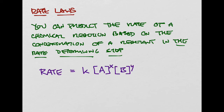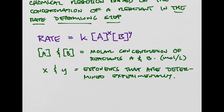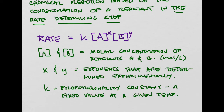The rate law is: rate = k[A]^x [B]^y, where [A] and [B] are the molar concentrations of reactants A and B in moles per liter (molarity). X and Y are exponents determined experimentally — exactly what we'll be doing in lab. K is the proportionality constant, which is a fixed value at a given temperature; underline that, because it will change depending on the temperature.